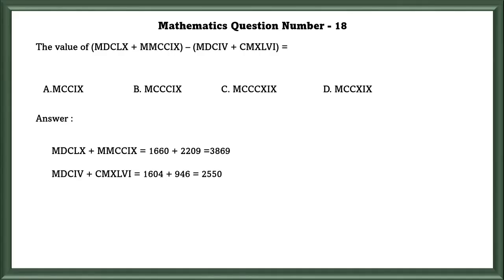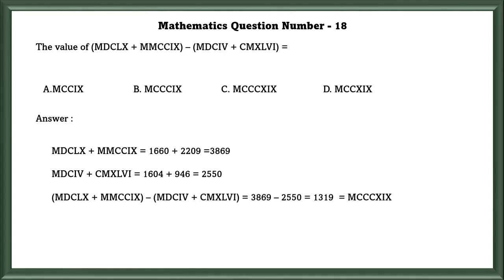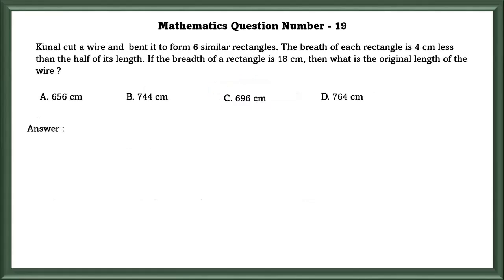They have asked to subtract it. So, if we subtract, we will get 1319. That is the C option.